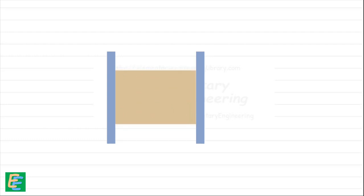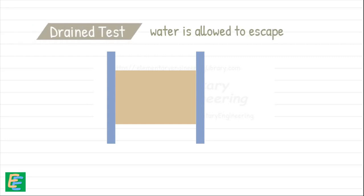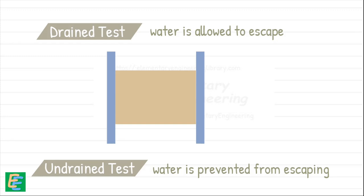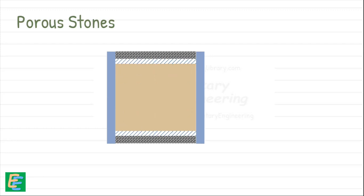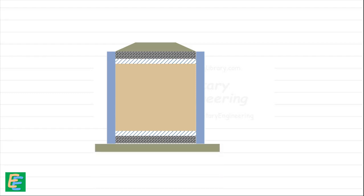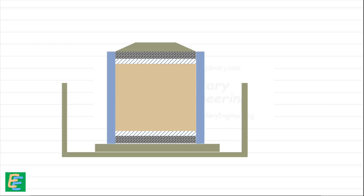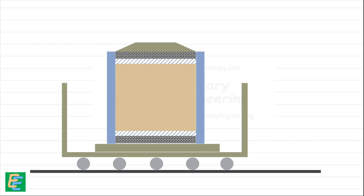During the test, the soil is compressed and water tries to leave the sample. We can either allow the water to drain out, which is called a drained test, or prevent the water from escaping, which is called an undrained test. In a drained test setup, porous stones are placed at the top and bottom of the soil sample to help water drain out. To apply the normal load from the top, a pressure pad is fitted into the box. The lower half of the box is fixed to a base plate held in a larger container supported on rollers.